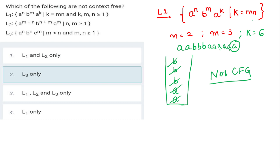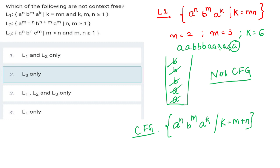If instead the exponent k were equal to m+n rather than m×n, then it would have been a CFG — try it yourself. But for L1 where we are multiplying, it is not a CFG. It can be solved with the help of a Turing machine but cannot be solved with a single stack. Therefore L1 is not a CFG.